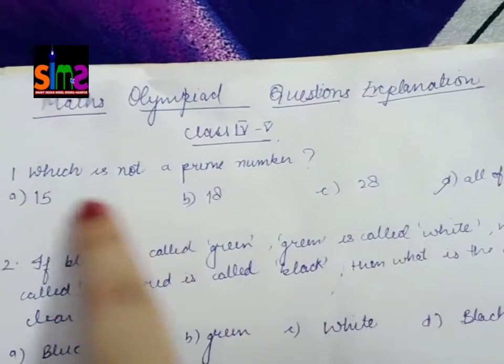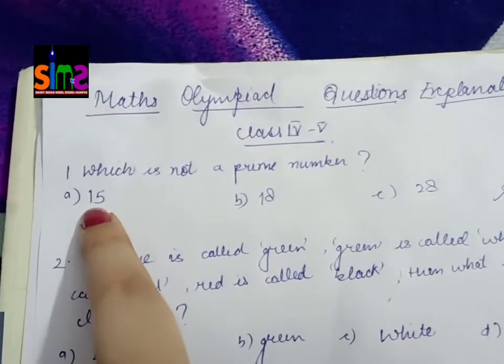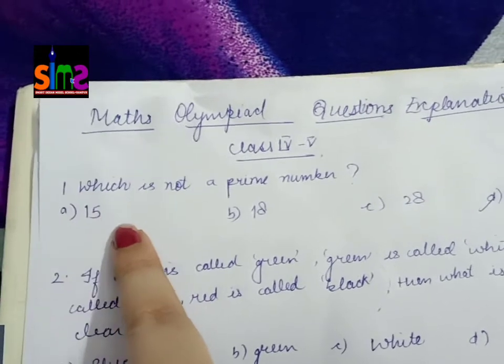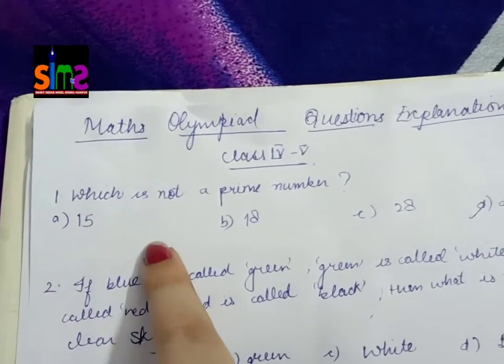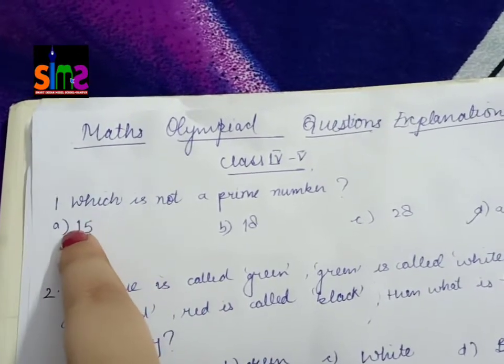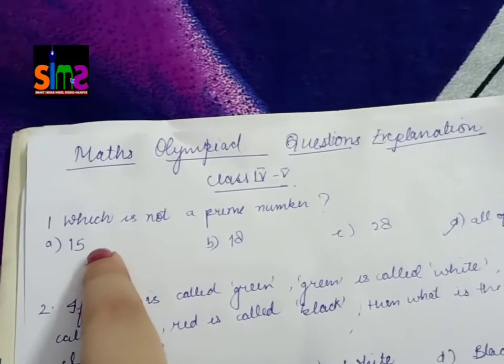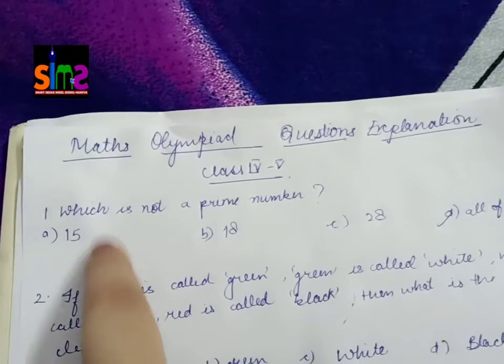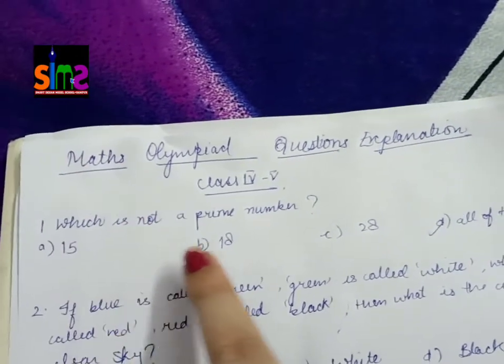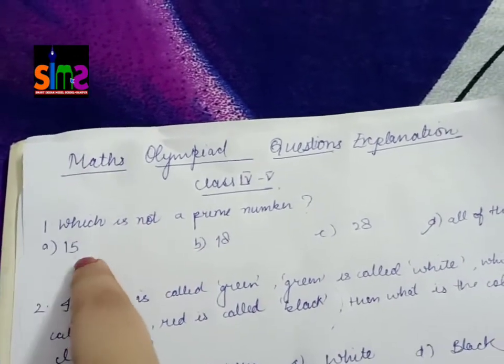Let's check 15. It comes in the 3 times table and the 5 times table. Three fives are fifteen. So besides one and fifteen itself, it has two more factors. That means it's not a prime number.